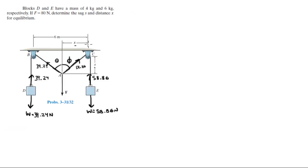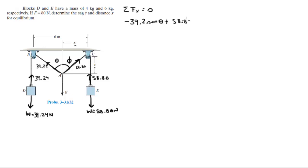Now we have this free body diagram. We know that the sum of the forces in the X is equal to zero. So at point A: negative 39.24 sine of theta plus 58.86 sine of phi is equal to zero. So sine of phi is equal to 2 sine of theta over 3. Let's call this equation 1.